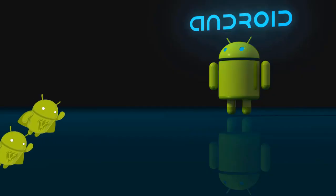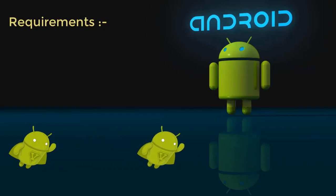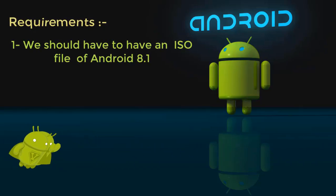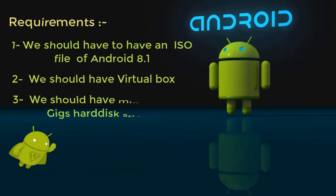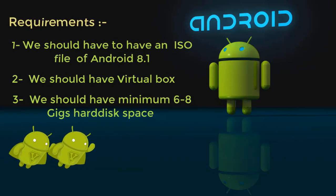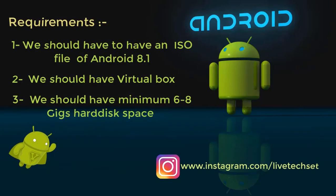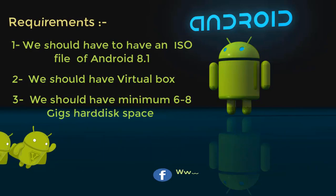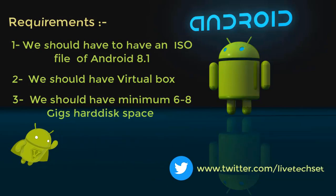Before installation of Android 8.1 in our PC, we need to understand the requirements. Our first requirement is we should have an ISO file of Android 8.1. Second requirement is we should have VirtualBox. Third requirement is we should have a minimum of six to eight gigs of free hard disk space. These are the requirements to install Android 8.1 in VirtualBox. If you want to install Android 8.1 directly on your PC or laptop, you should have a bootable ISO file of Android 8.1.